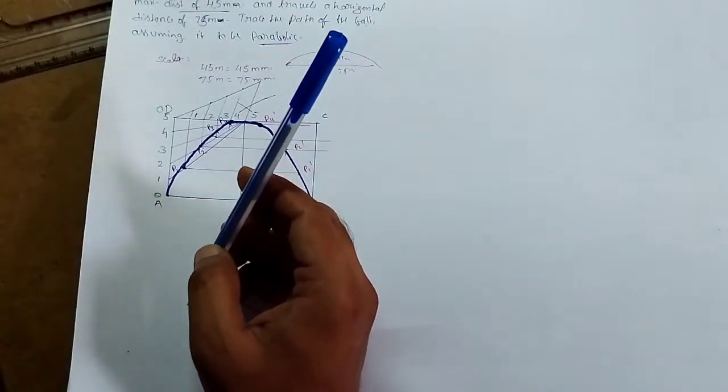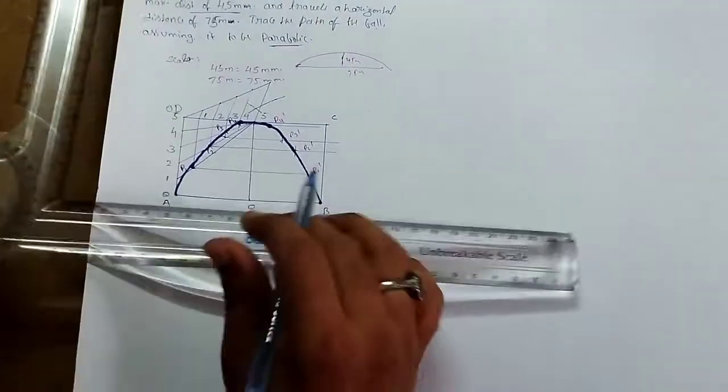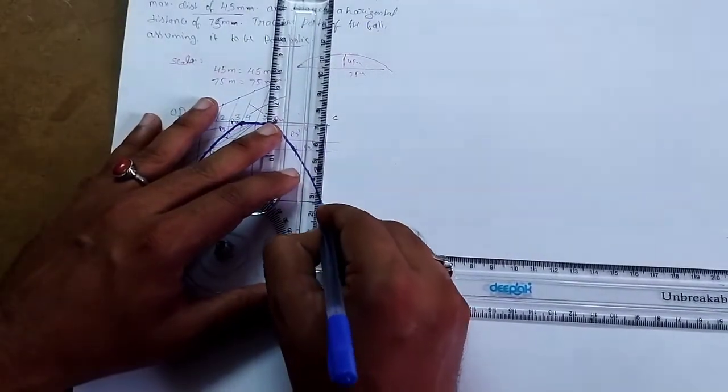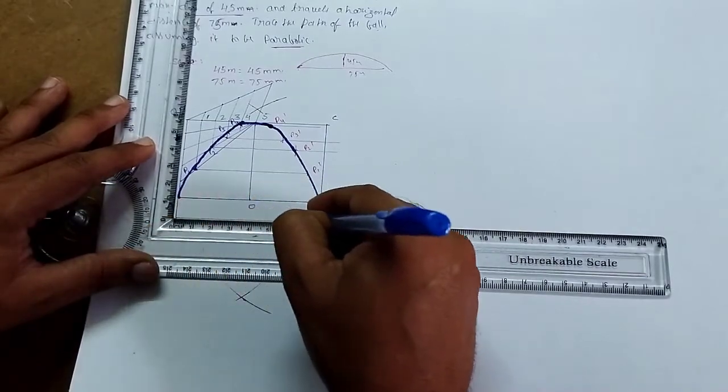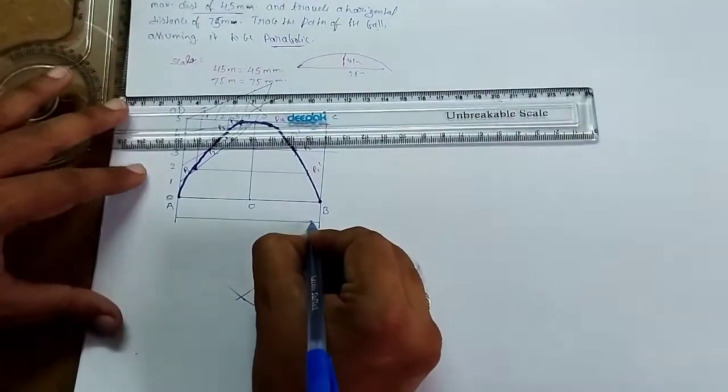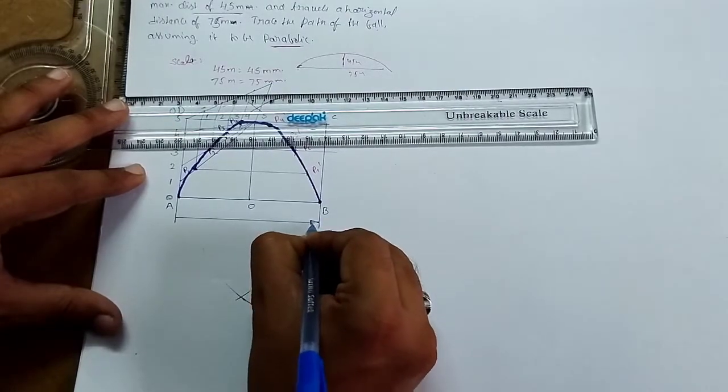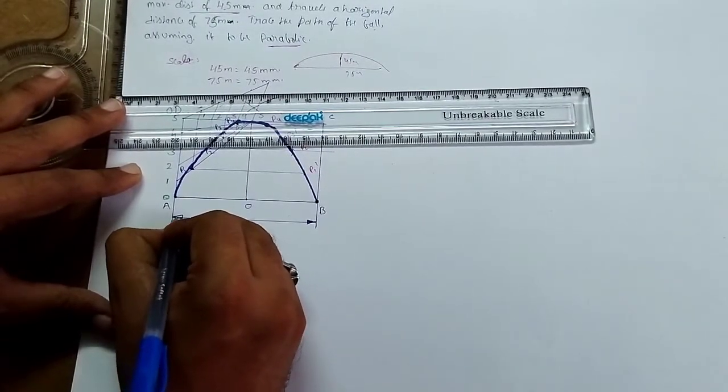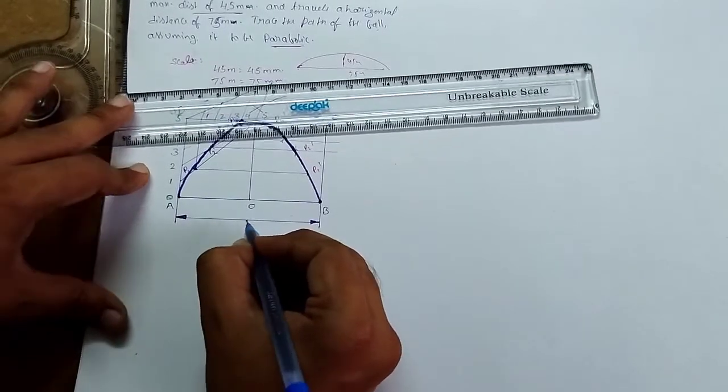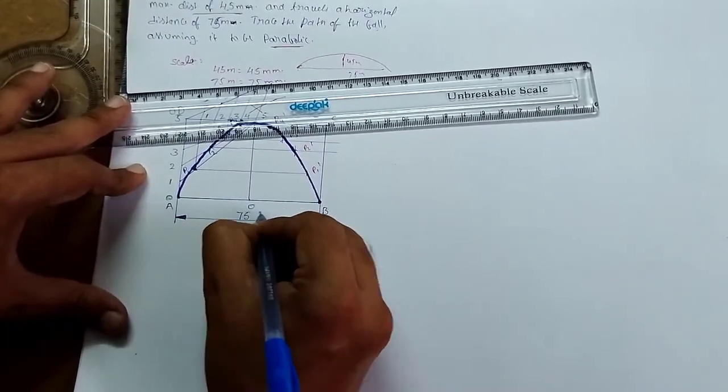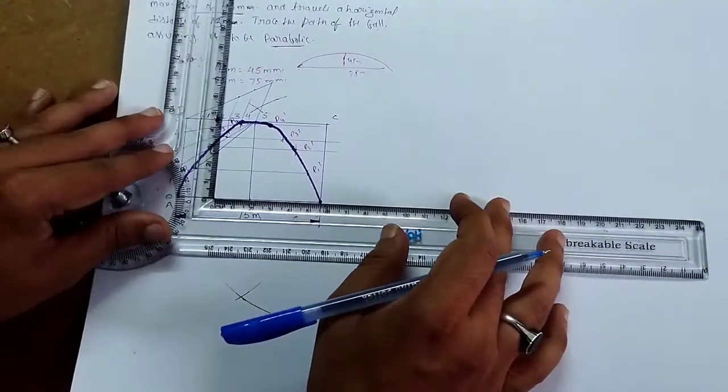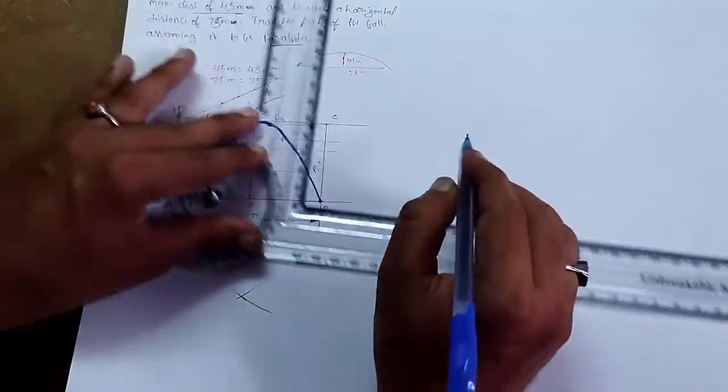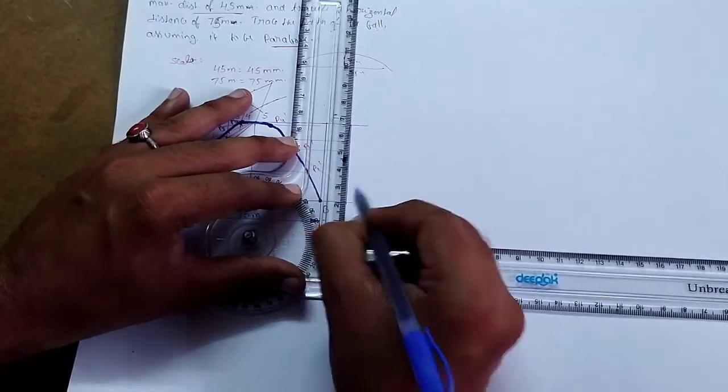Add dimensioning. Mark the base as 75 meters and the maximum height as 45 meters, according to our scale.